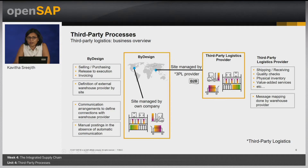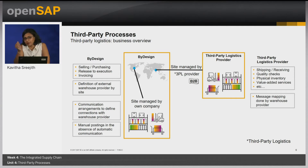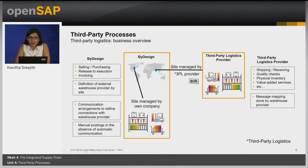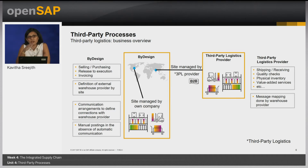The 3PL warehouse provider takes responsibility for all execution processes like shipping, receiving, physical inventory management, and quality control. One important aspect is that after the physical execution happens at the 3PL site, the final inbound and outbound delivery documents are created in the Business by Design system based on confirmation communication from the 3PL. This is done to update the correct inventory levels and carry on with invoicing and financials.